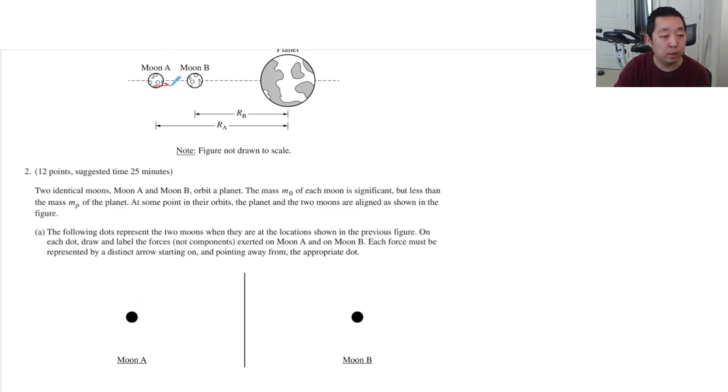Moon A is going to be pulled on by both the planet and the moon here. So we're going to call that the force from the planet on A, and we'll call this FAB. And then moon B feels a force pulling to the right and left. This left force is FAB, and those two are the same. They're equal and opposite by Newton's third law. And then this is the force of the planet on B. Those are the only gravitational forces acting on that system.